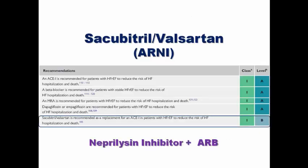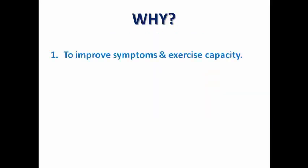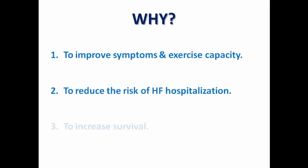Sacubitril is a neprilysin inhibitor and Valsartan is an angiotensin receptor blocker. Together they are recommended as a class 1 indication, but as a replacement for ACE inhibitor in patients with heart failure with reduced ejection fraction, to reduce hospitalization and death. So the first question — why do we prescribe it? To improve symptoms and exercise capacity, to reduce the risk of heart failure hospitalization, and to increase survival.